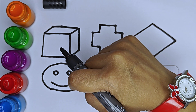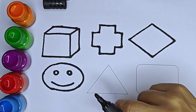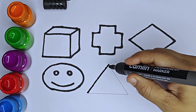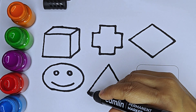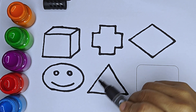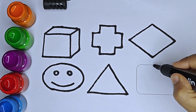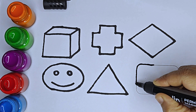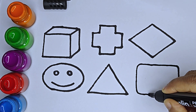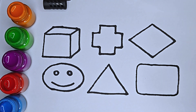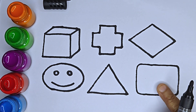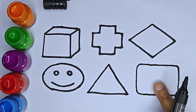This is a smiley emoji. This is an emoji, smiley emoji. This shape is an equilateral triangle — all its sides are equal. This is a rectangle. This is a rounded rectangle — all its corners are round.